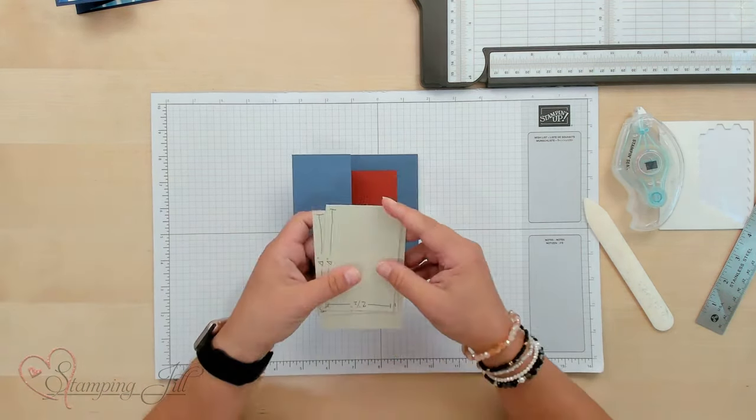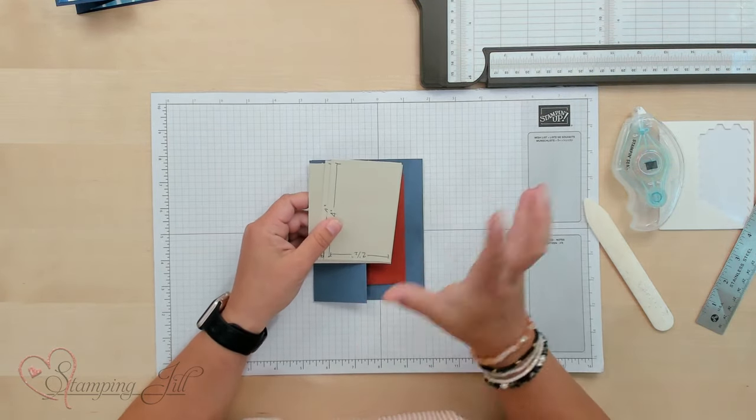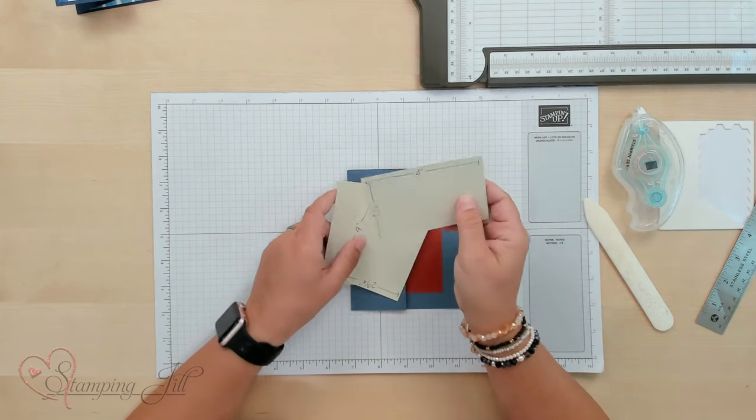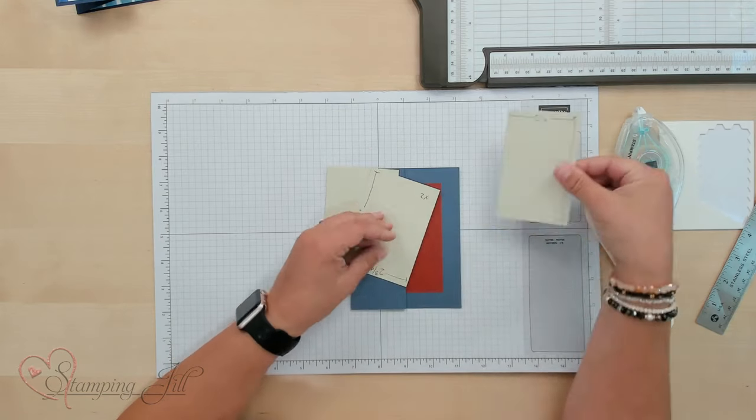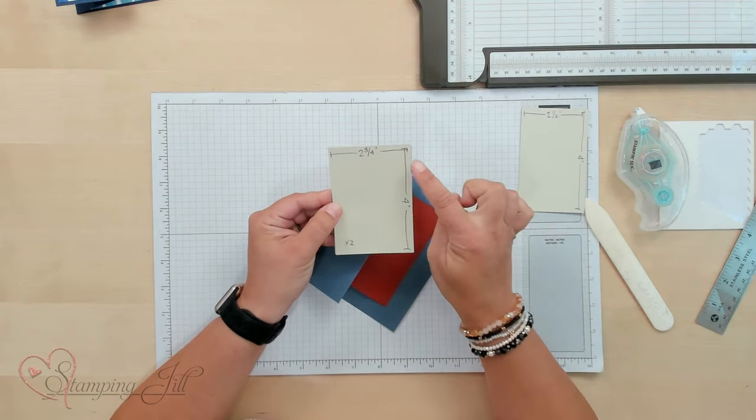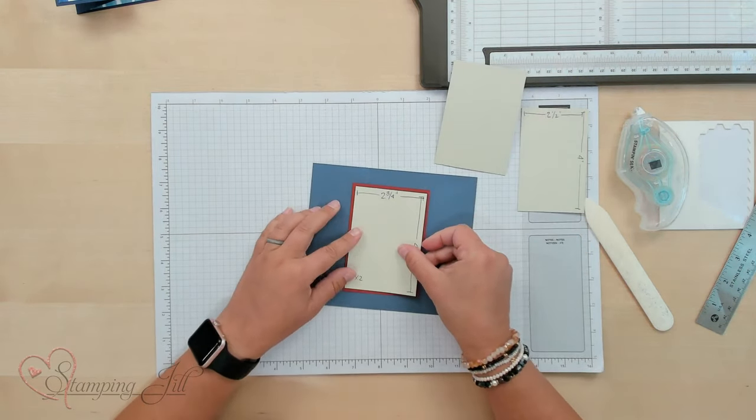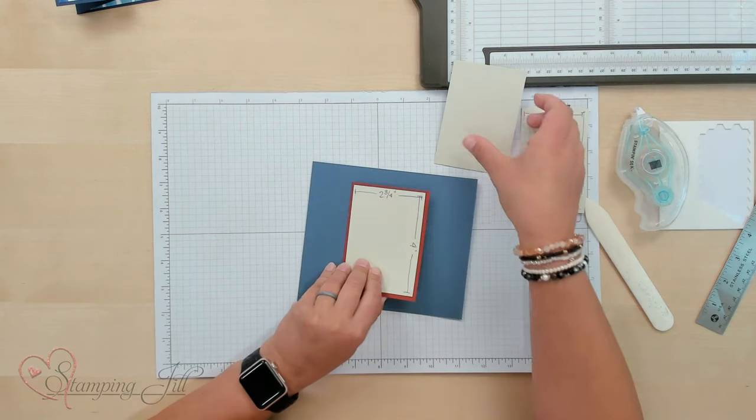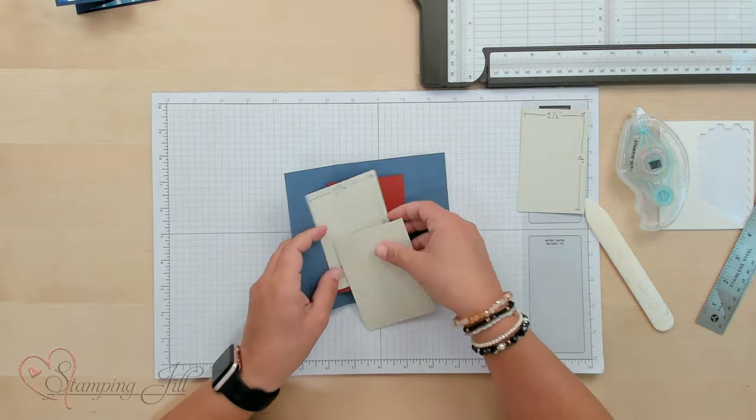And then we have three other pieces. Now these are going to be kind of the pieces that you'll decorate on your card. So we have one piece that is 2 1/2 by 4. That's going to be on the front. And then I have two pieces at 4 by 2 3/4. So one of these is going to go on the inside of my little double flap, and the other is going to go on the inside of my card.